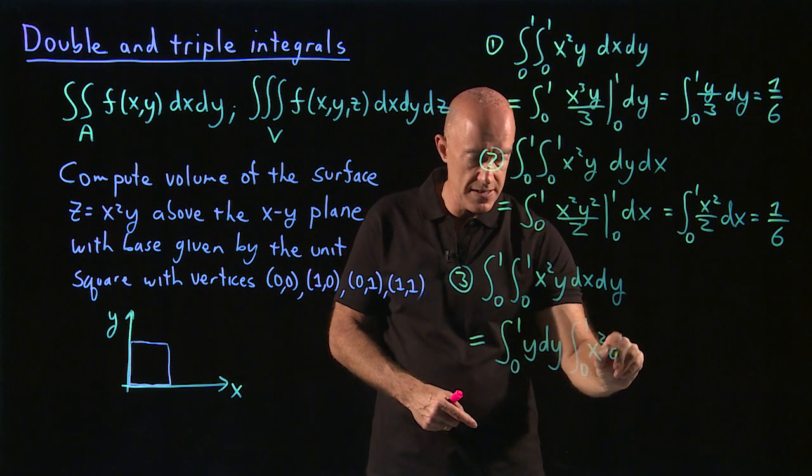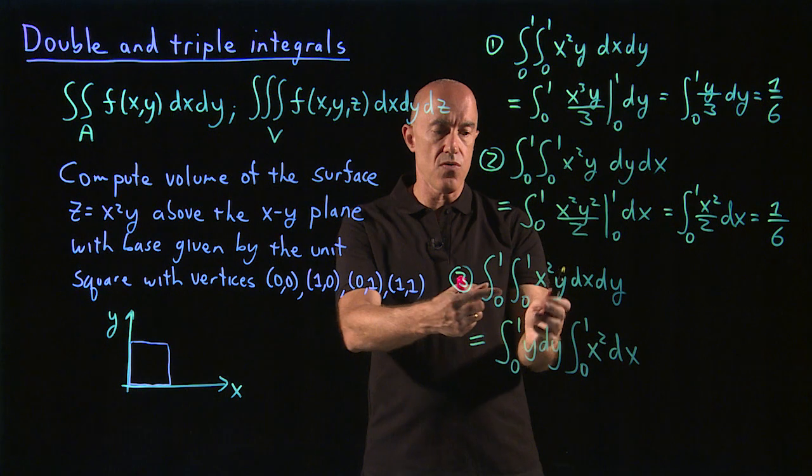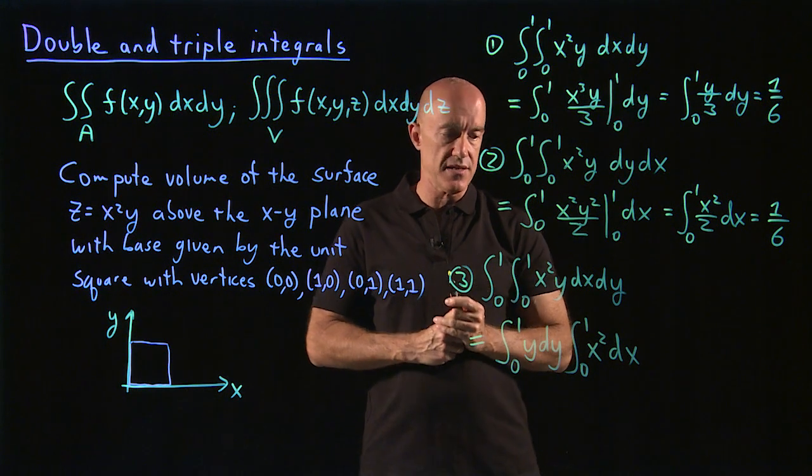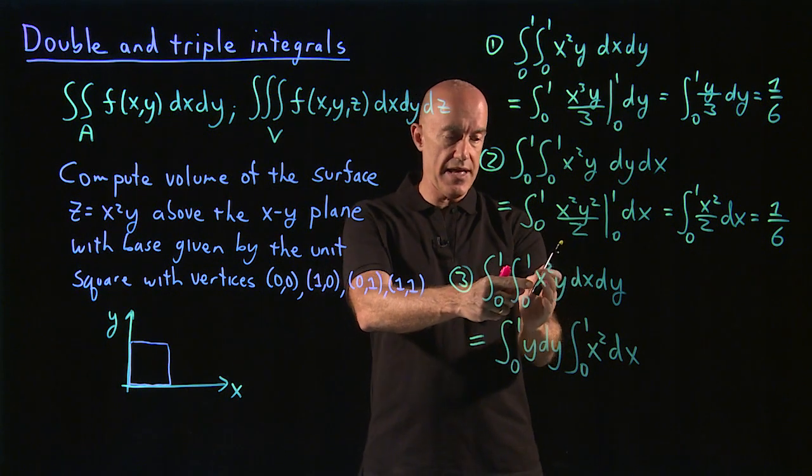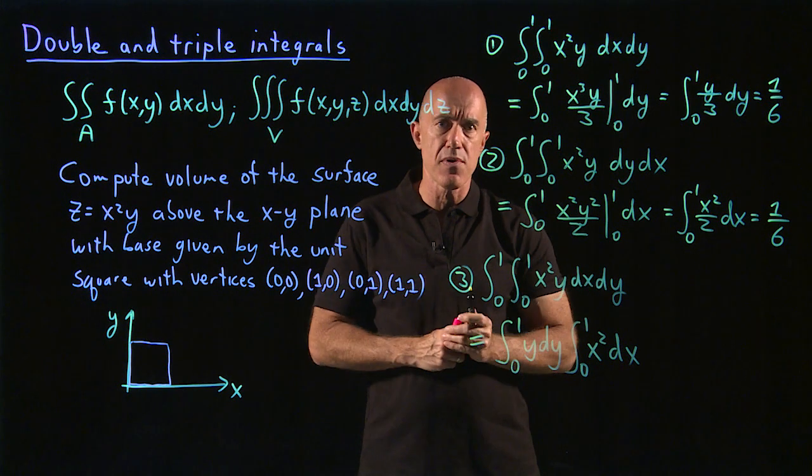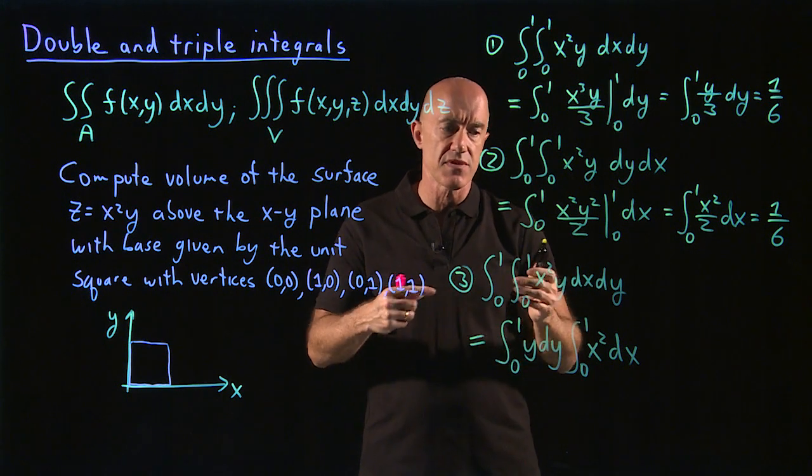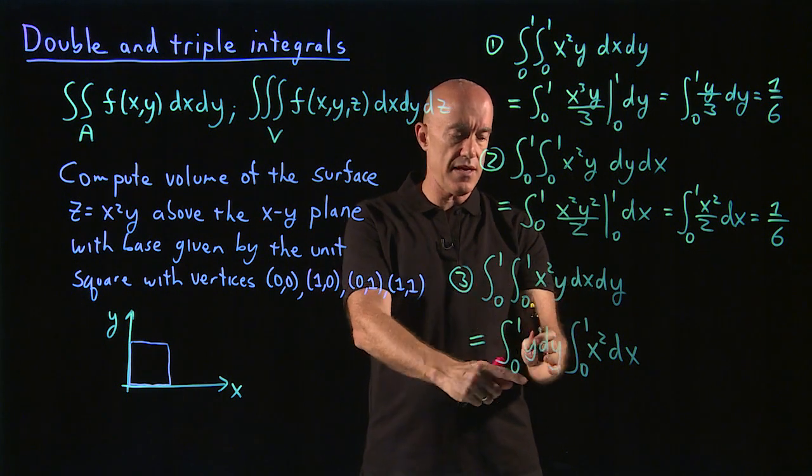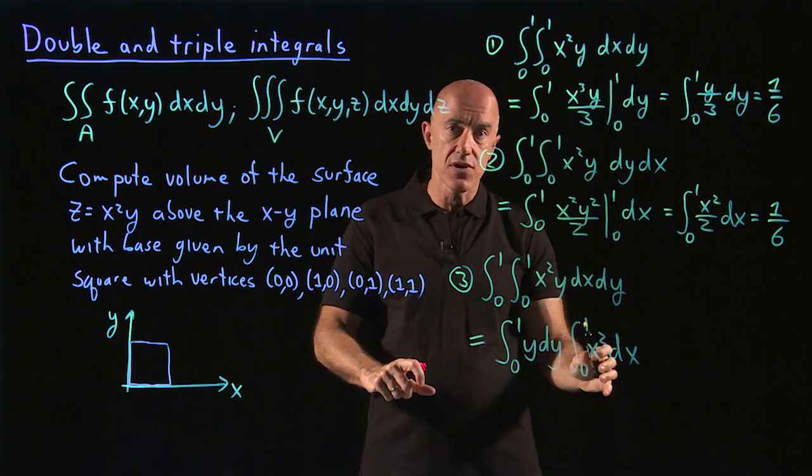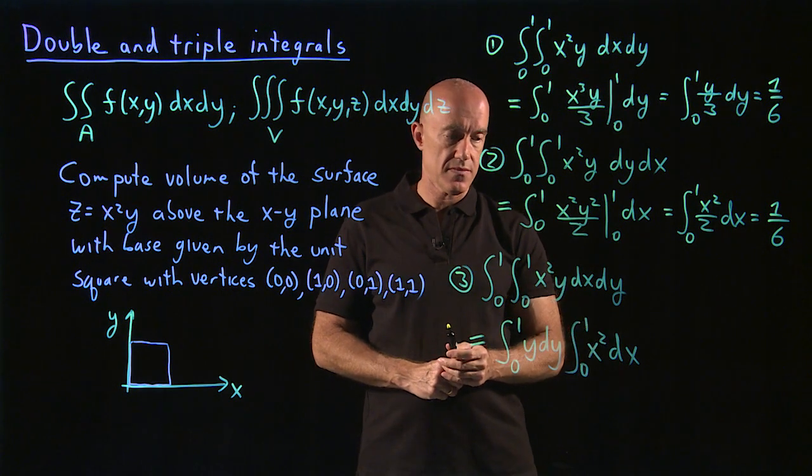So when the limits don't depend on x and y and x squared y is separable into a function of x times a function of y, then you can factor the integral.